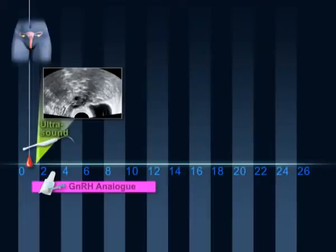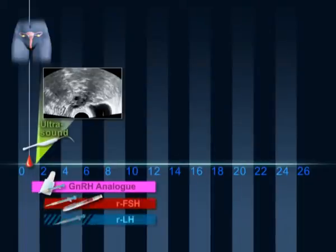If everything is normal, the GnRH analogue agonist is administered. One or two days later, subcutaneous daily application of the hormone FSH is initiated. This hormone facilitates the growth of the follicles in the ovary. The objective is to have four to seven follicles grow per ovary.